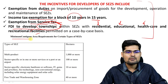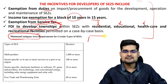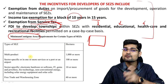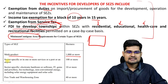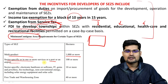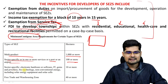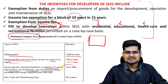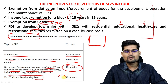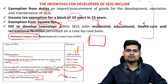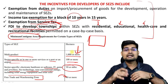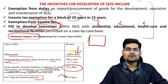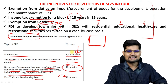Because SEZs are geographical entities, minimum contiguous area requirements apply. For multi-product zones, 1000 or more hectares are required; for sector-specific zones like a port or airport, 100 or more hectares; for software, IT, jewelry, and biotechnology, 10 or more hectares; and for free trade and warehousing, 40 or more hectares. The state has to ensure this much land is allocated before a SEZ can be created.